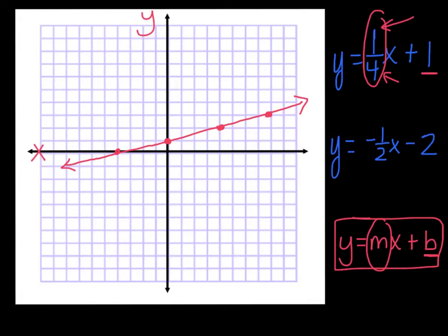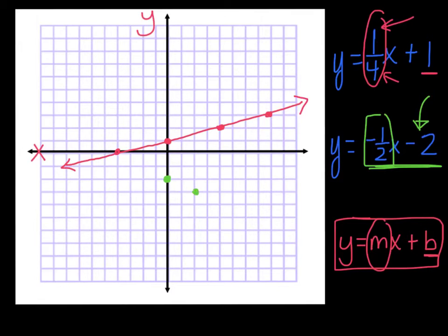My second line: the y-intercept is negative two, so I'm going to come to the y-axis and put my y-intercept at negative two. The slope is negative one-half, so that means I'm going to go down one over two. I'll keep going down one over two, but you might notice it's not going to cross the first line going down here, so I need to go the other way.